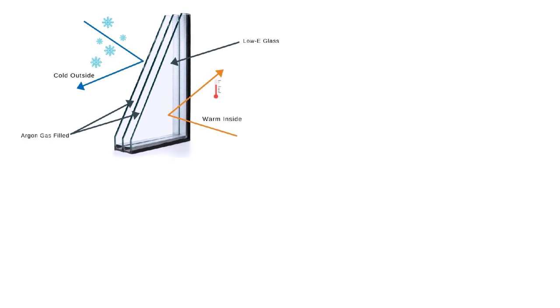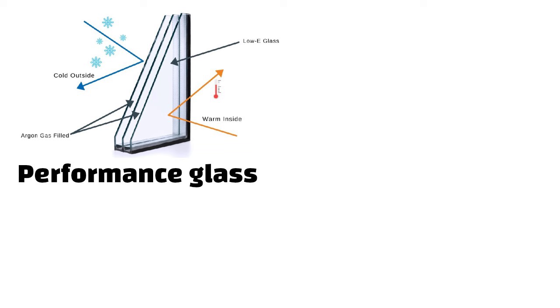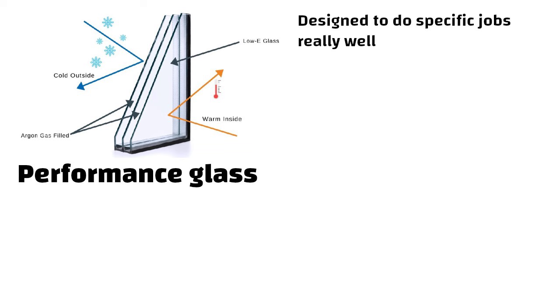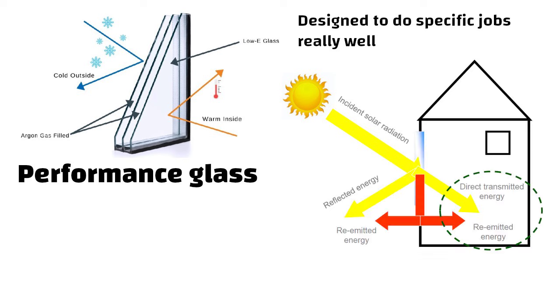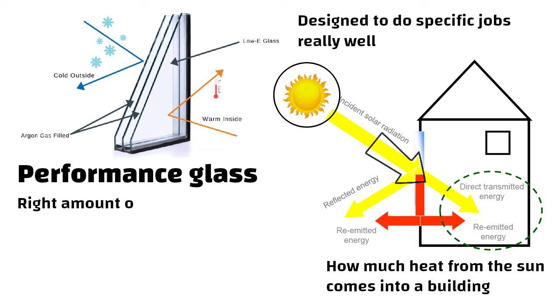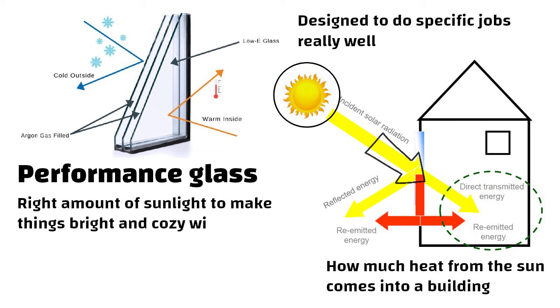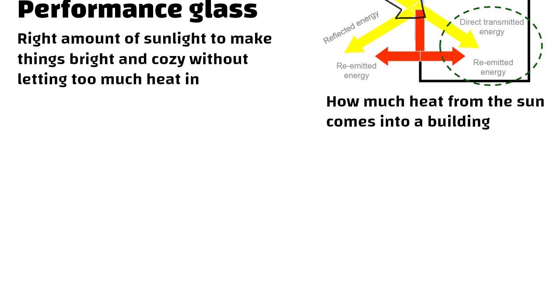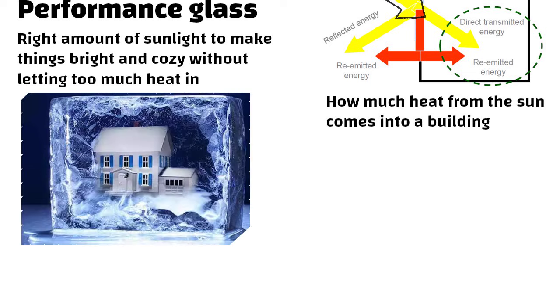Hello friends. Performance glass is a special kind of glass that is designed to do specific jobs really well. One of its jobs is to control how much heat from the sun comes into a building. It can let in just the right amount of sunlight to make things bright and cozy without letting too much heat in. This helps keep the place cool in the summer.